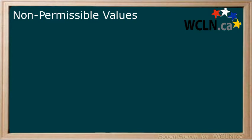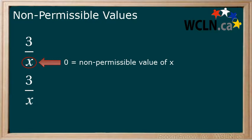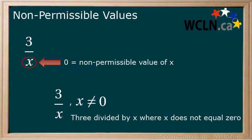This leads us to the idea of a non-permissible value. We will start with the idea that 3 divided by any number but 0 is allowed, and we will use x to represent that any number. But we also know that x cannot equal 0. So 0 is a non-permissible value for x. We write this as 3 divided by x, where x ≠ 0.